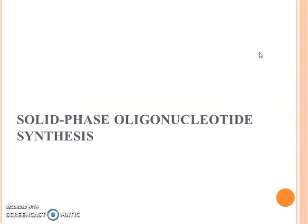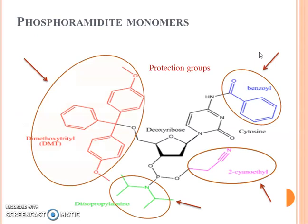Now we are going to learn about how solid-phase oligonucleotide synthesis takes place. For that we have to learn about the basic structure of phosphoramidite monomers. In the structure you can see that the black part is the nucleotide and it is being protected by four different protection groups: the red one is DMT, the green one is diisopropylamino, the purple one is 2-cyanoethyl, and the blue one is benzoyl.